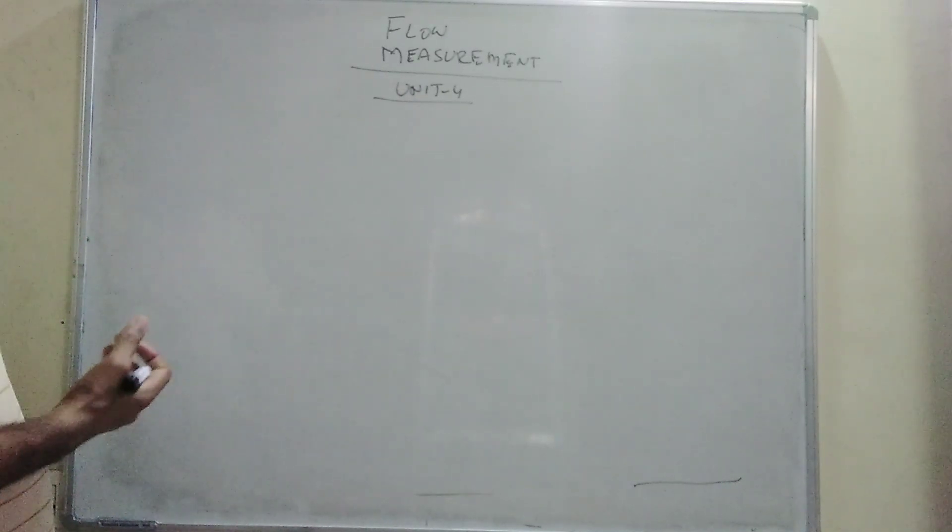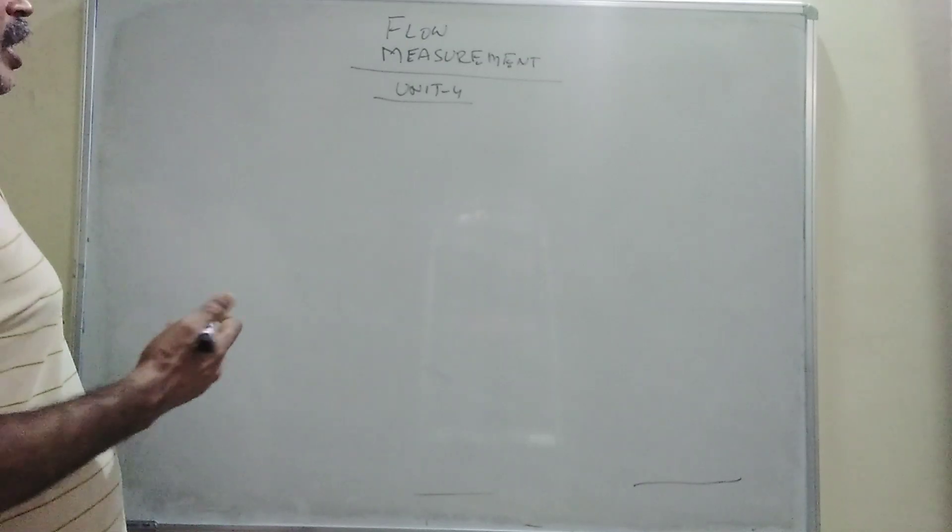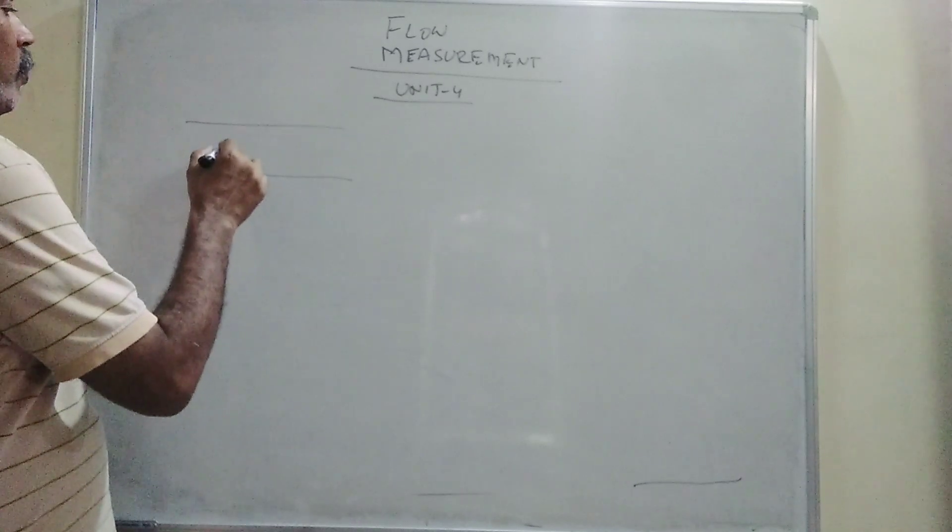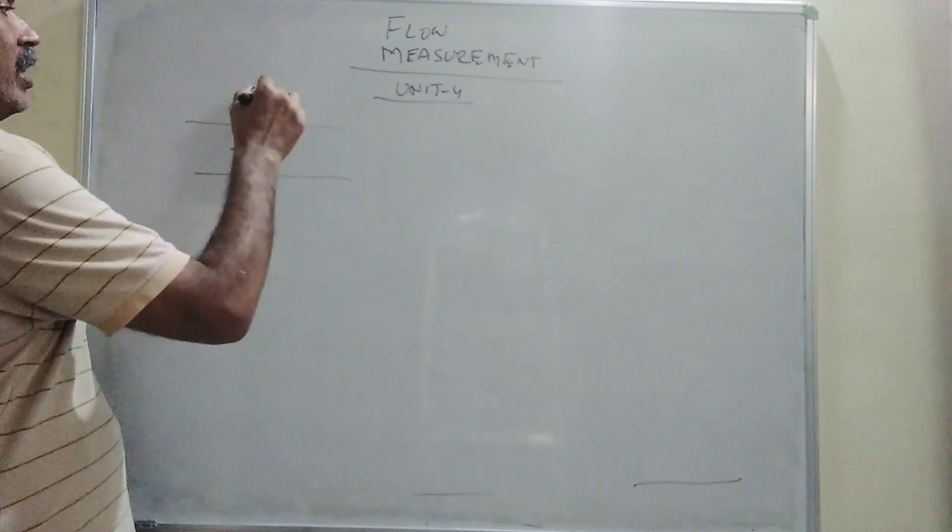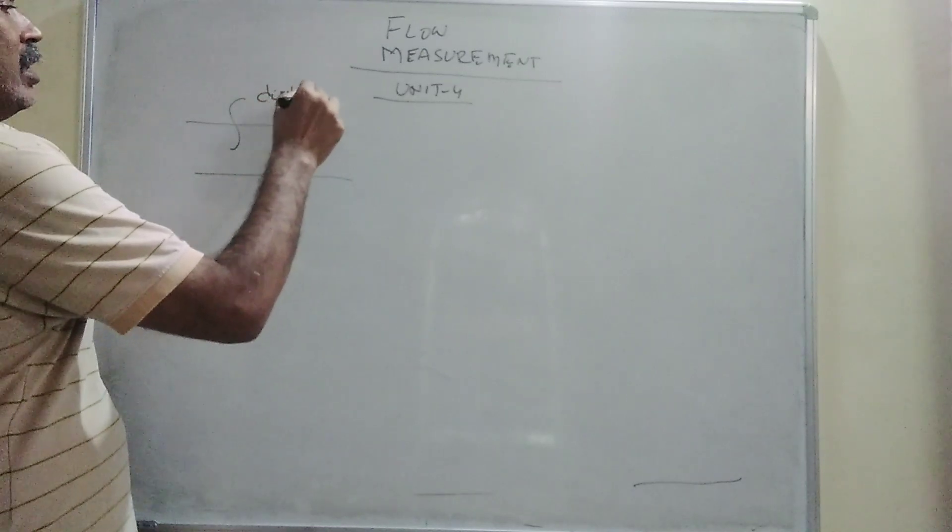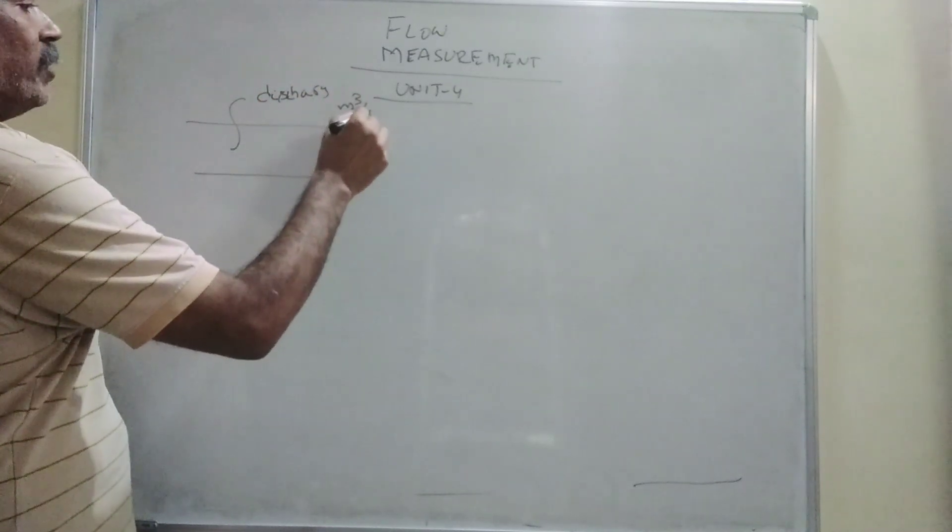Now the flow measurement, normally when some liquid is flowing in a pipeline, what is the discharge, how much discharge is flowing, that is meter cube per second, units in meter cube per second.